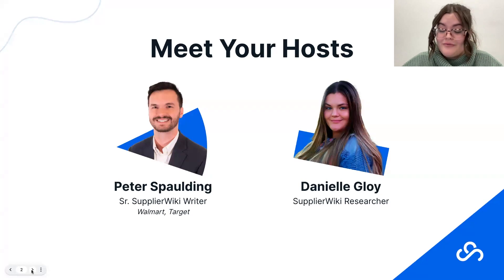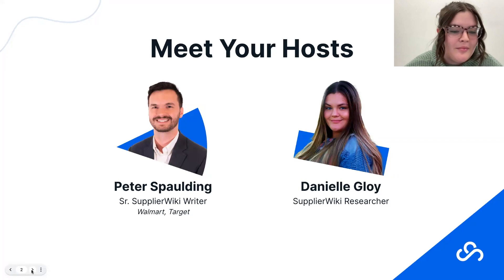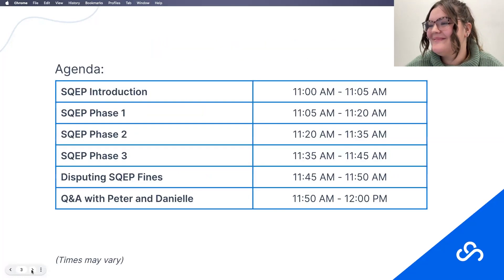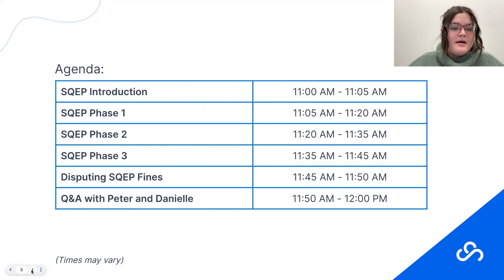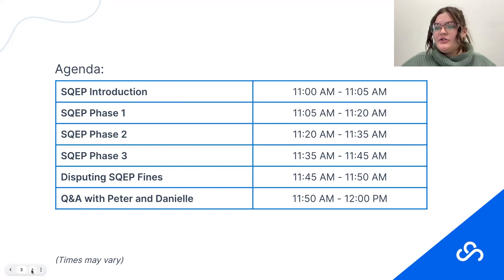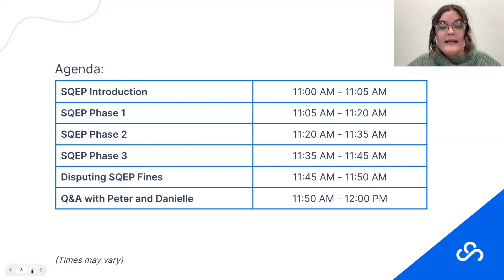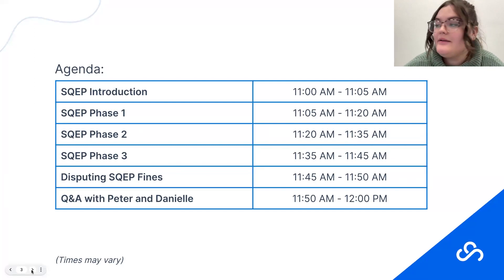All resources can be found on our Supplier Wiki website. Moving on, as we go through SQEP phases one through three, some topics you can expect to see throughout the webinar: a quick outline of what the SQEP program is, who is and who is not affected, a brief overview of the program, how to dispute potential SQEP fines, and a Q&A at the end. Please submit any questions along the way.